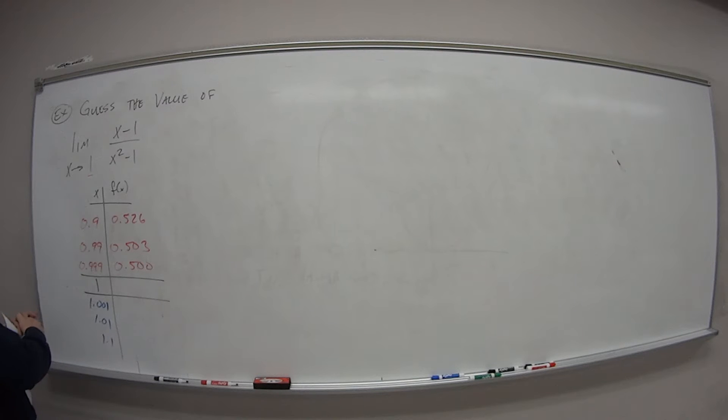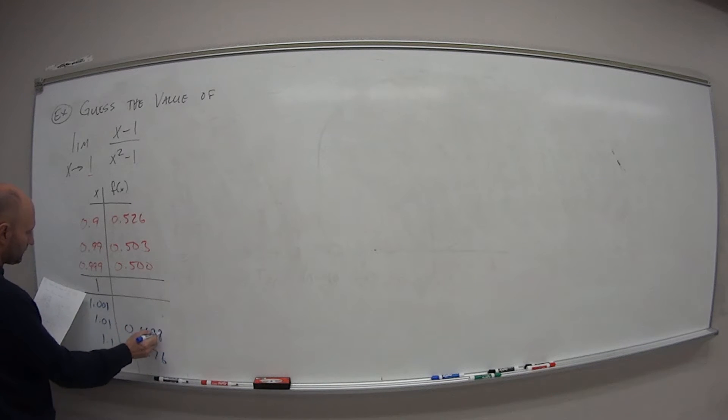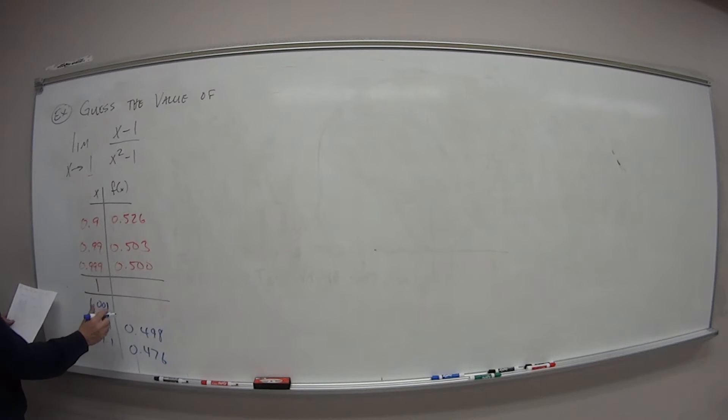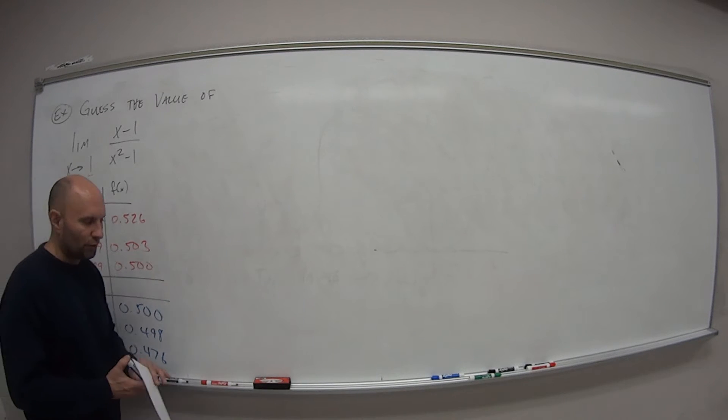Similarly, for the values on the right side of 1, on the positive side of the number line, the values on the right of 1, for 1.1 we get 0.476. For 1.01 we get 0.498. And for 1.001, as you can probably guess, we get 0.500.